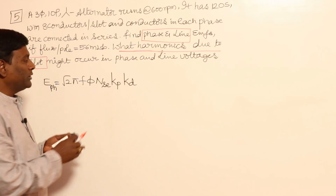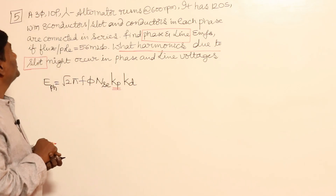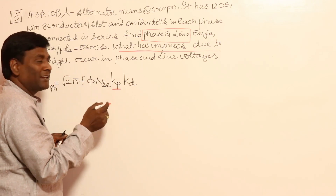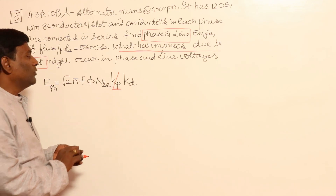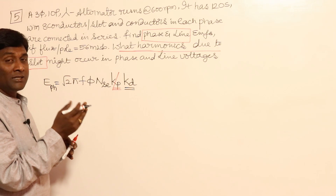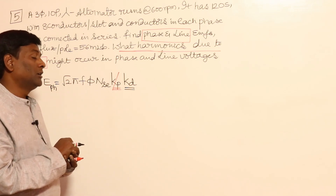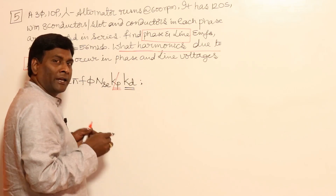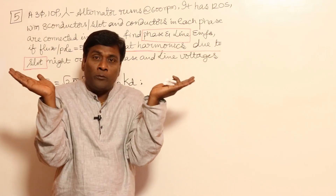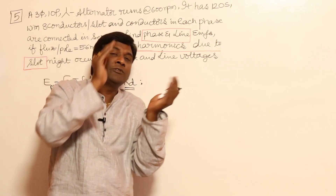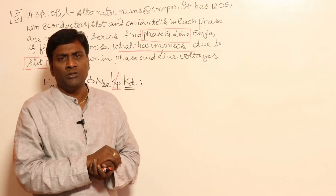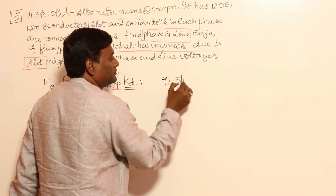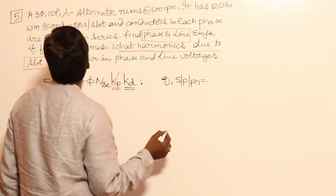Now, Kp — did they give any information about short pitching angle? No information was given about short pitching angle ε, so Kp = 1. About distribution factor Kd — no information given, but we cannot take Kd as 1; it has to be calculated separately. Distribution factor is decided by how many slots per pole per phase there are. If it is more than one, distribution must be considered. So let me calculate q — slots per pole per phase. There are 120 slots.